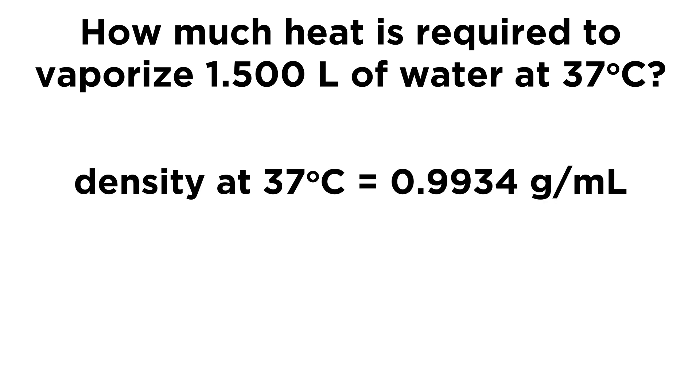In order to answer this, we need to know that the density of water at 37 degrees Celsius is actually just a hair under one gram per milliliter, which is what we're used to. We're going to use 0.9934 grams per milliliter to be very specific.